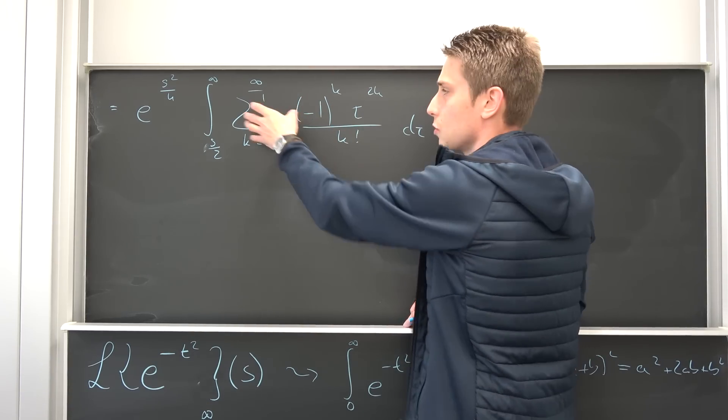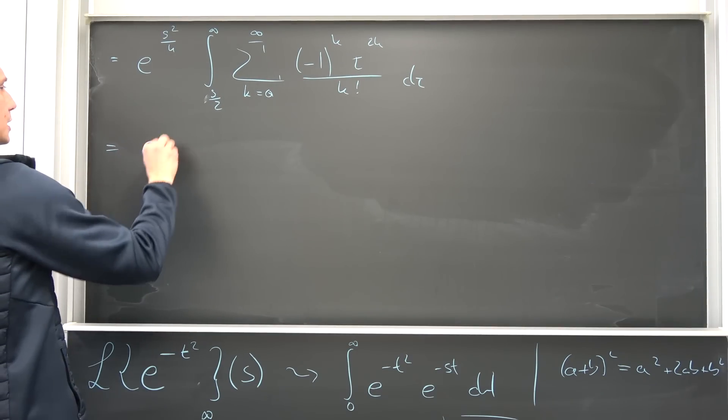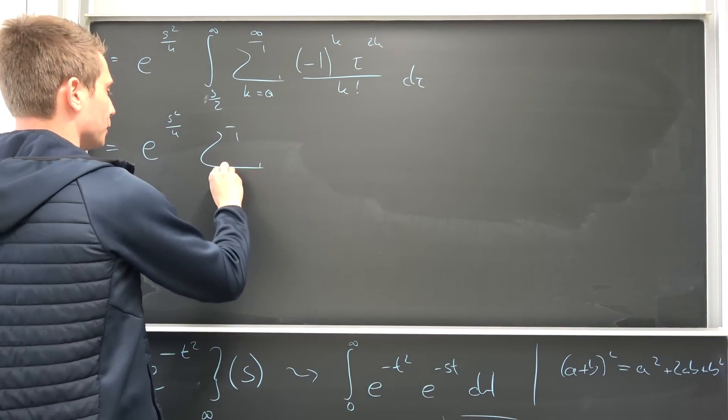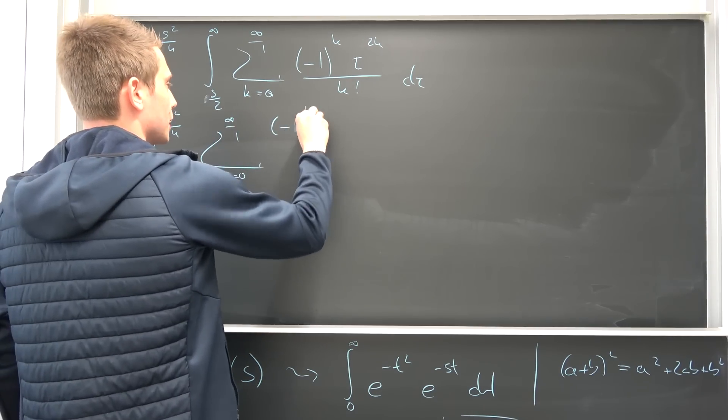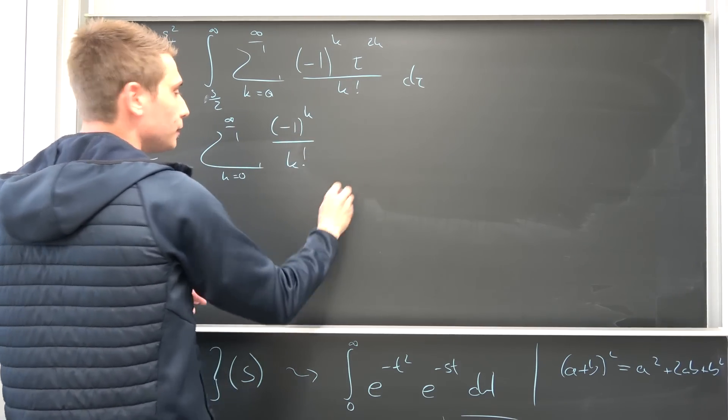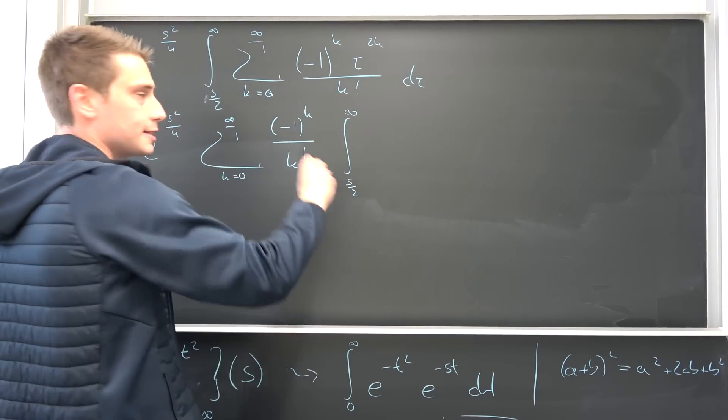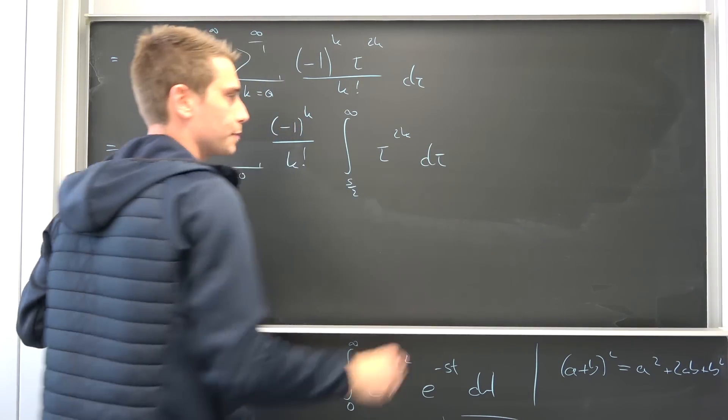Also, we can bring this factor right here, this constant to the outside together with the summation to end up with a beautiful e to the s squared over 4. Then the infinity boy from k equals to 0 to infinity, negative 1 to the kth power over k factorial and now times the integral s over 2 to infinity tau to the 2kth power integrated with respect to tau.